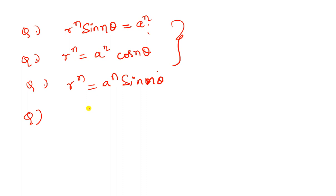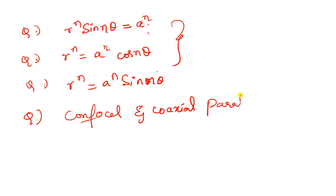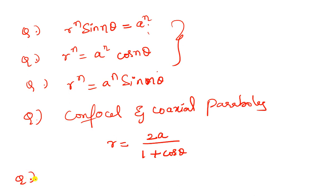Find the equation of the system of orthogonal trajectories of the confocal and coaxial parabolas: R equals 2A divided by 1 plus cos theta. Also: R equals 2A into cos theta plus sin theta — this is an often-repeated question. You have to practice these questions.